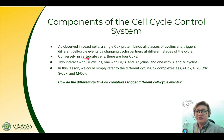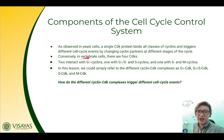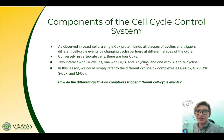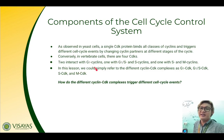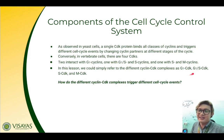In most cells, the fourth class of cyclins — G1 cyclins — helps govern the activities of G1/S cyclins, which control progression through Start in late G1. As observed in yeast, a single CDK protein binds all classes of cyclins, so there is only one type of CDK but many types of cyclins, and they trigger different cell cycle events by changing cyclin partners at different stages of the cycle. In vertebrate cells, by contrast, there are four CDKs: two interact with G1 cyclins, one with G1/S and S cyclins, and one with S and M cyclins.